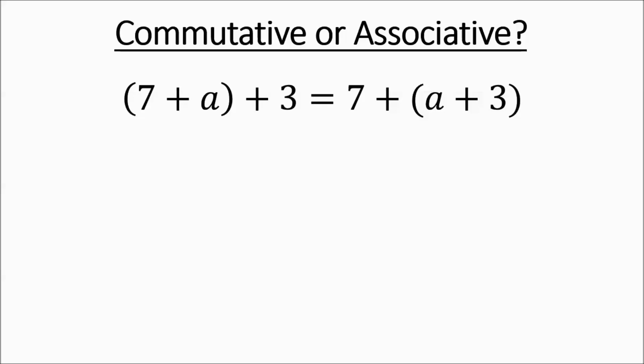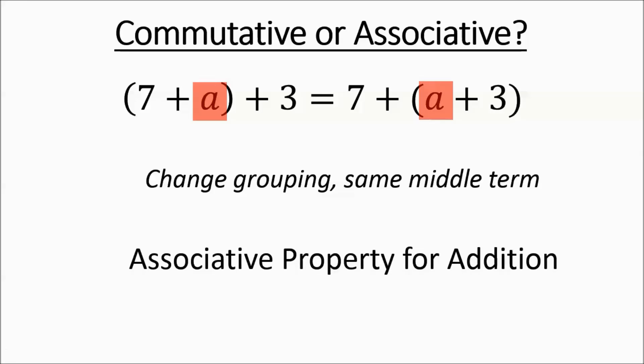Next we have 7A3, 7A3. The order did not change. We have the same middle term being grouped with a new term. Over here the A's with the 7, now A's with 3. So that is associative. It's a change in grouping. Change in grouping, same middle term, associative.